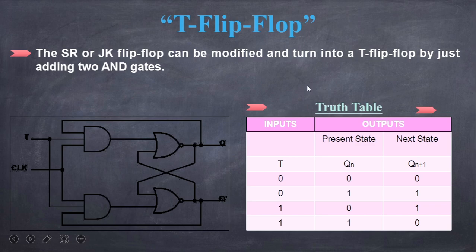The truth table of a T flip-flop is that if you toggle 0, the present state is 0 and the next state is 0 also. If you toggle 0 again, the present state is 1 and the next state is 1. If you toggle 1, the present state is 0 and the next state is 1. If you toggle again 1, present state is 1 and the next state is 0. This is the truth table of a T flip-flop.